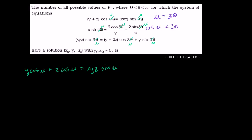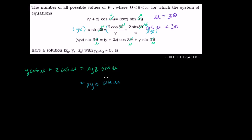For the second equation, if we multiply both sides by yz, we'll get xyz sine of u on the right-hand side — the same expression as in the first equation. Multiplying both sides by yz to clear the denominators: the left-hand side becomes xyz sine of u, and then yz times 2 cosine of u over y gives 2z cosine of u, and yz times 2 sine of u over z gives 2y sine of u. That's the second equation.